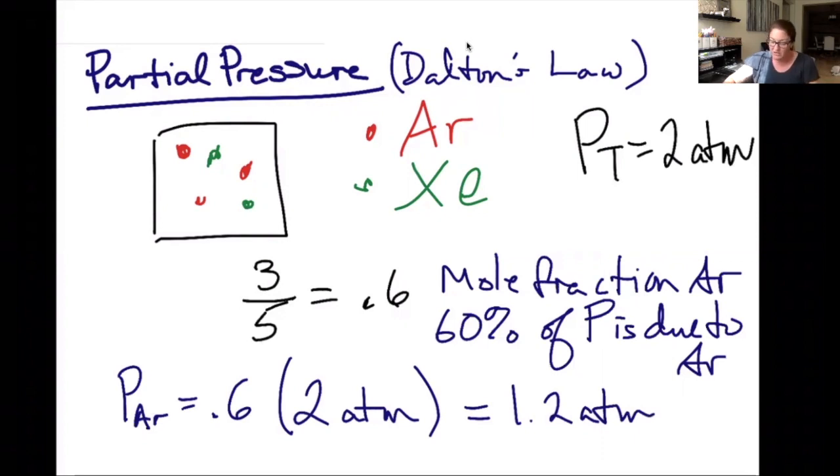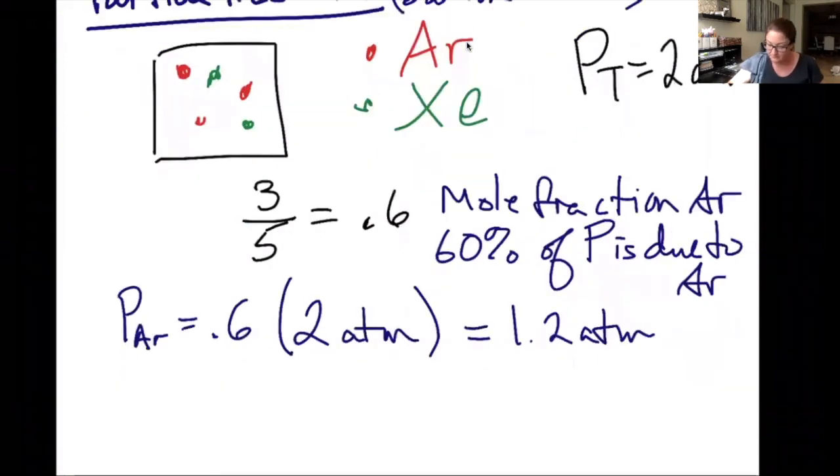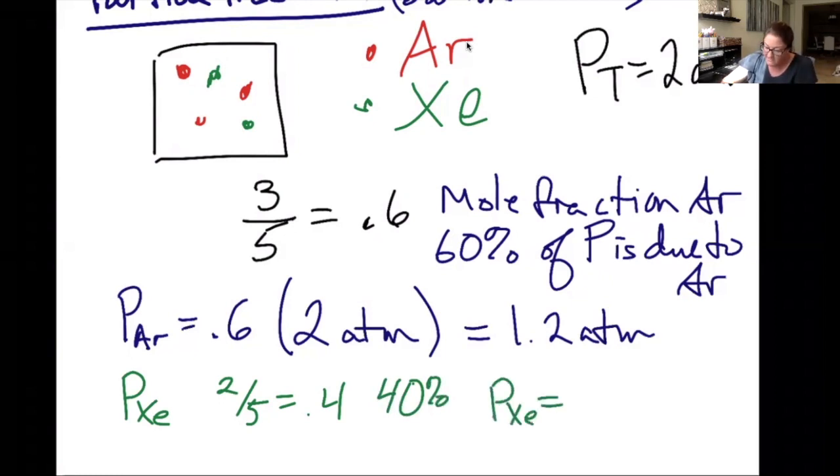If I want to find the partial pressure of xenon, I'm going to find the mole fraction of xenon, which is 2 fifths, which equals 0.4. My mole fraction of xenon is 0.4 or 40%. So if I want that partial pressure of xenon, I'm going to take 0.4 and multiply it by the total pressure, and I get 0.8 atm.